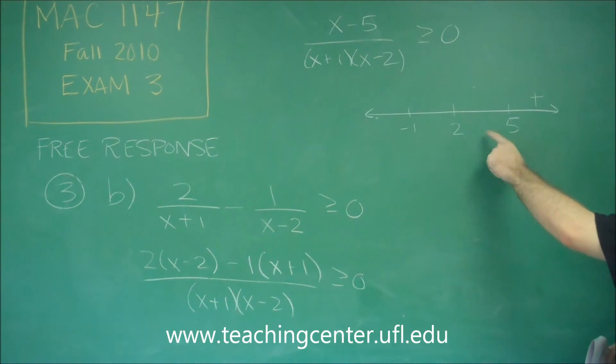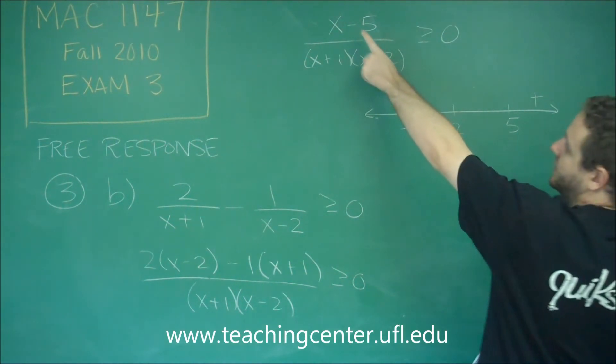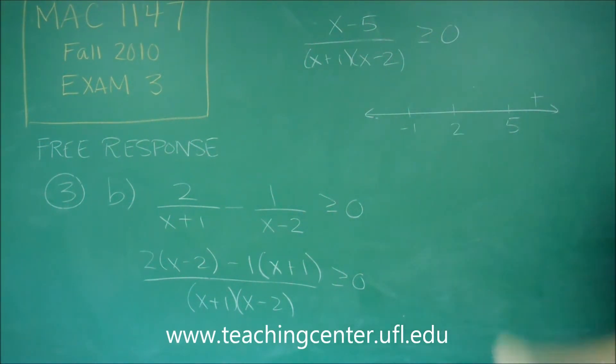Anything between 2 and 5, so let's say 3. We are going to get negative up here, but positive and positive down there. A negative divided by a positive will definitely be negative.